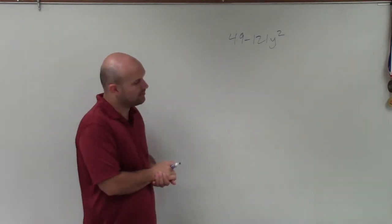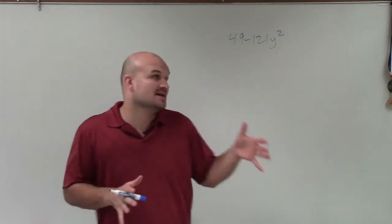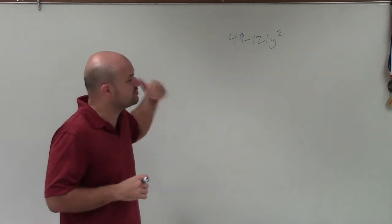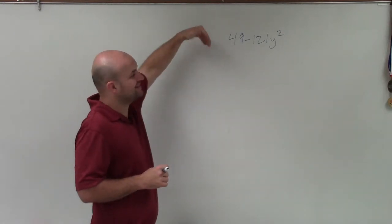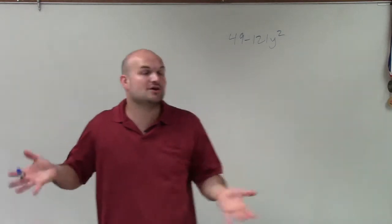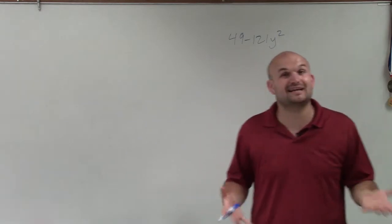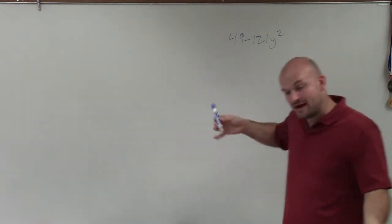To go ahead and do this, I'm looking at this and say, how can I factor this? Can I factor out using a GCF? I look at these two and say, no, there's no common terms between 49 and 121. I already tried dividing in all the possible numbers I could think of, but they don't have any common factors. Nor do they have any common variable factors.